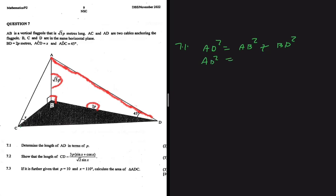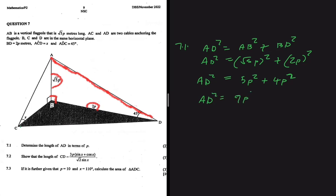What is AB? AB is square root of 5 multiplied by P, squared, plus BD squared. What is BD? That is 2P, and then we square that. So AD squared will be equal to 5P squared plus 4P squared. Now it's easy to see that AD squared equals 9P squared. If you take the square root on both sides, you're going to get AD equals 3P. And just like that, we're done with that equation.